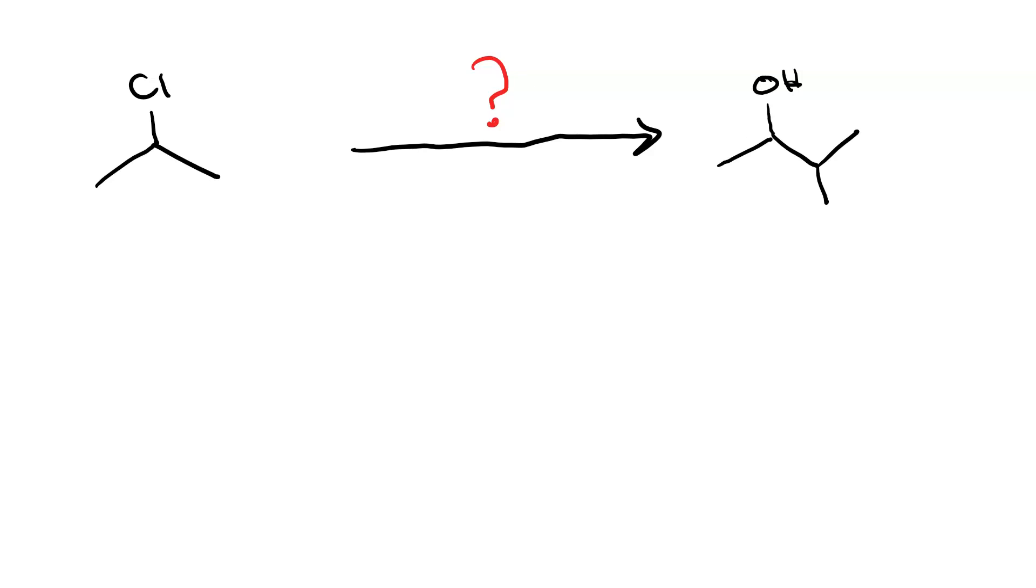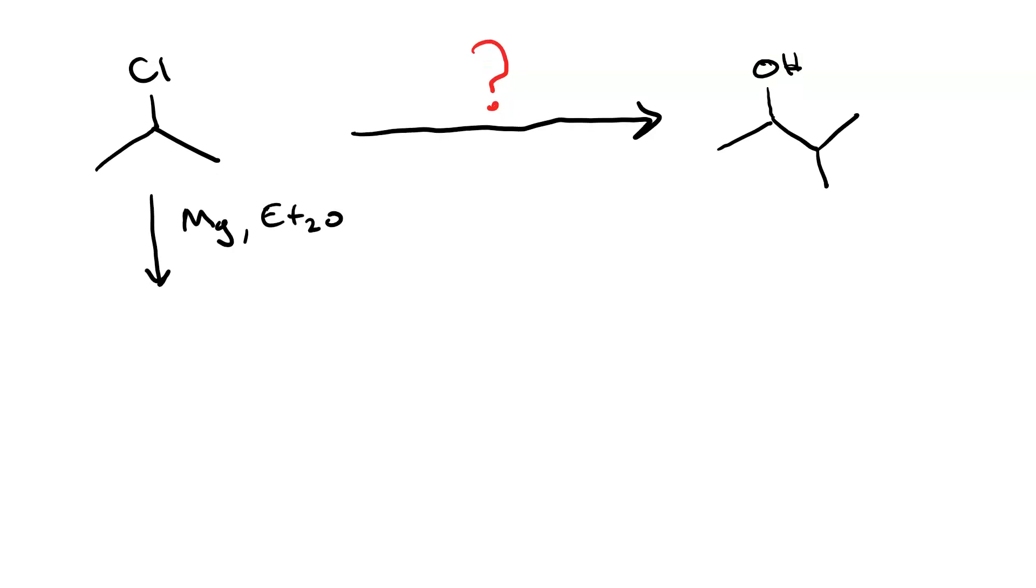Let's do this synthesis via a Grignard Reaction. First, we take our 2-chloropropane and we react it with magnesium and diethyl ether to make our Grignard Reagent, isopropyl magnesium chloride.